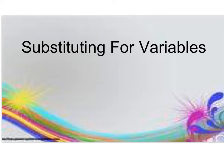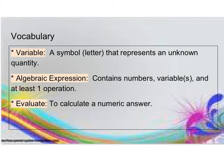Today's lesson is about substituting for variables. Before we begin, let's make sure we understand our vocabulary. A variable is a symbol or letter that represents an unknown quantity. An algebraic expression contains numbers, variables, and at least one operation, but no equal sign. To evaluate means to calculate a numeric answer.